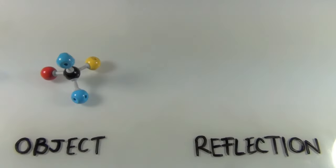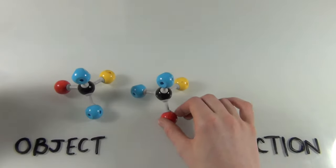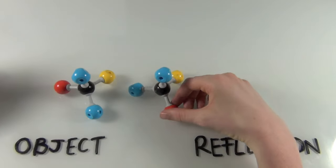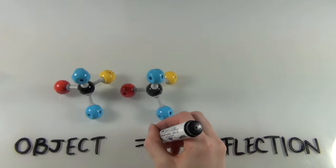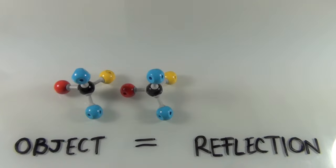Changing another of the balls to yellow. With a little bit more rotation, we see that the object is identical to its reflection.